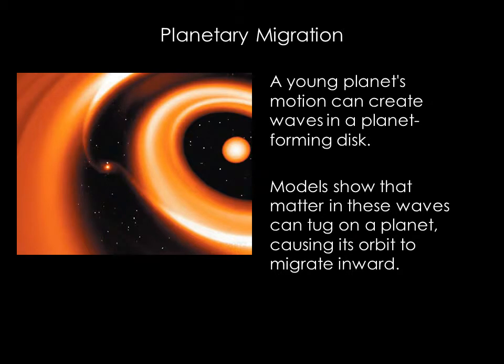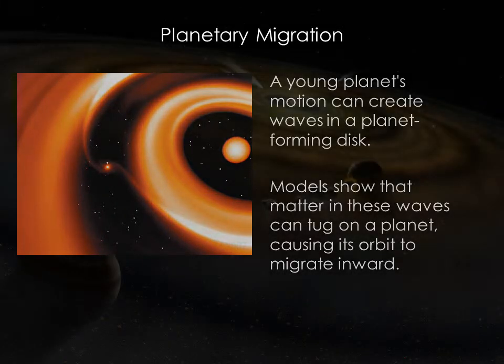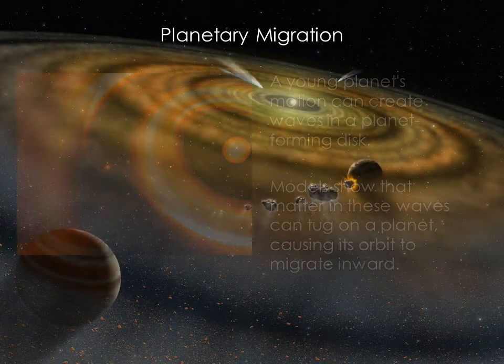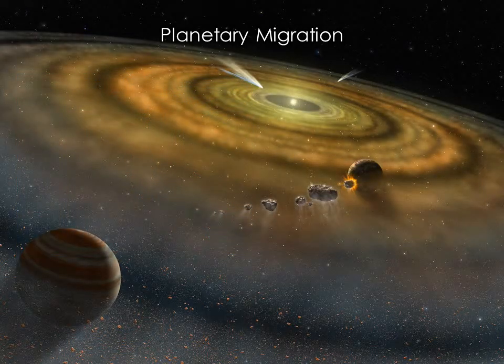A suspected cause of planetary migration has to do with waves in the planet-forming disk. Shortly after any star forms, there is a disk of material that surrounds the star, and it's from this disk that the planets form. A young, hot Jupiter orbiting in this disk can bunch up the material, creating denser areas. These denser areas propagate like waves and exert a gravitational pull on the planet that may cause it to migrate inward.